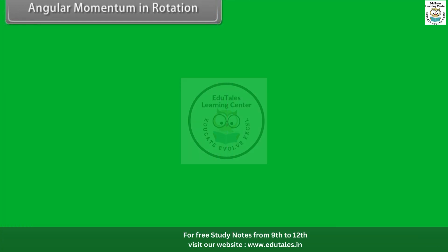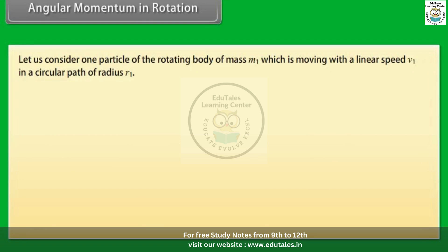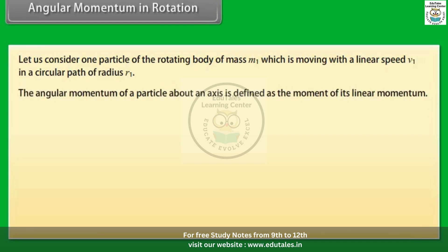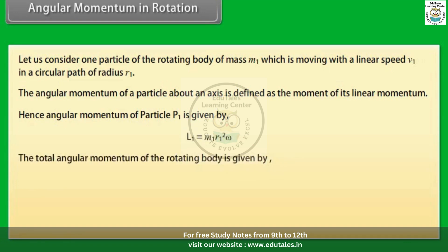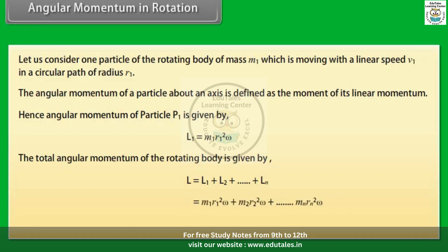Consider one particle of the rotating body of mass m₁ moving with linear speed v₁ in a circular path of radius r₁. The angular momentum of a particle about an axis is defined as the moment of its linear momentum. Angular momentum of particle p₁ is l₁ = m₁r₁²ω. The total angular momentum of the rotating body is L = l₁ + l₂ + ... + lₙ = m₁r₁²ω + m₂r₂²ω + ... + mₙrₙ²ω, giving the result L = Iω.